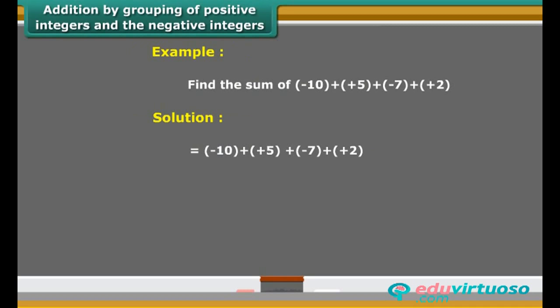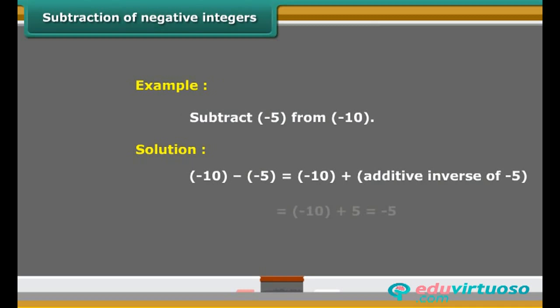For better understanding, we can solve one example. We arrange the numbers so that the positive integers and the negative integers are grouped together. Now, let us find the value of minus 10 minus minus 5 using a number line. This is same as minus 10 plus 5, as the additive inverse of minus 5 is 5. First, we move five steps to the right on the number line starting from minus 10. Then, we reach to minus 5.